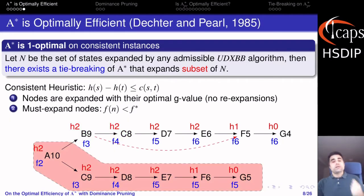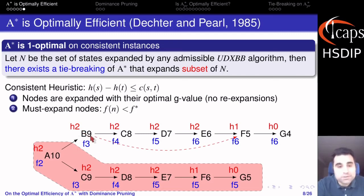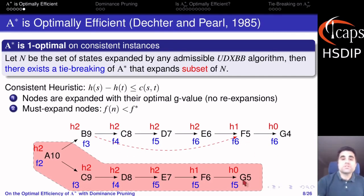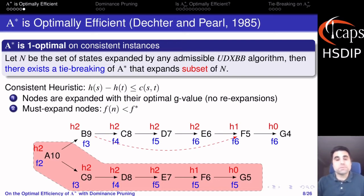One might ask why an algorithm can't just expand only the optimal solution path. Well, because then the algorithm will have no information on what's beyond b9, and as far as the algorithm knows there could be a transition from b9 to f5 leading to a total solution cost of 3. So if the algorithm doesn't expand b9, it has not proven that the solution is optimal, and there will be some problems where it returns a non-optimal solution.